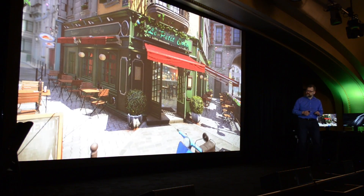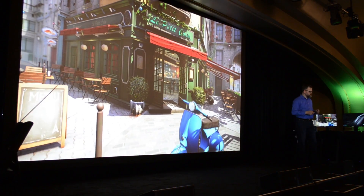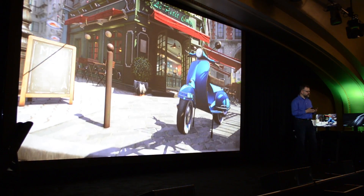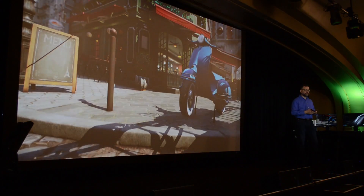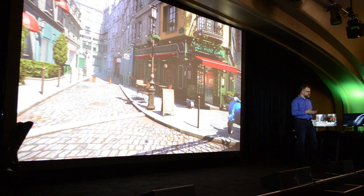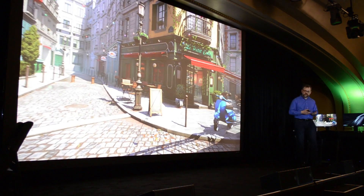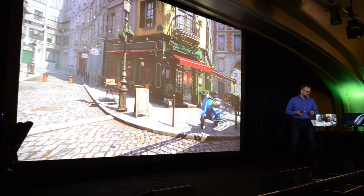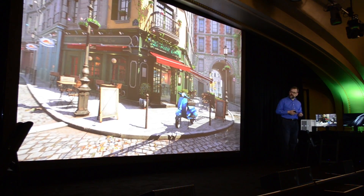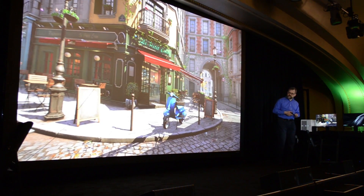Directly integrated into the engine: temporal anti-aliasing, specular anti-aliasing, and order-independent transparency. Amazon Lumberyard is the first game engine to directly integrate all three of these techniques.